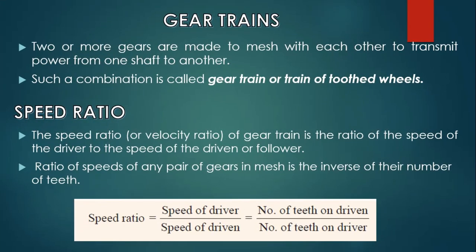Today we are going to discuss about Gear Trains. A gear train is a combination of gears used for transmitting motion from one shaft to another shaft. Two or more gears are made to mesh with each other to transmit power from one shaft to another. The gear train is necessary when it is required to either step up or step down the speed of the driven shaft. Such a combination is called a Gear Train or Train of Toothed Wheels.